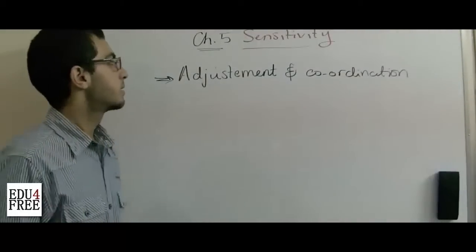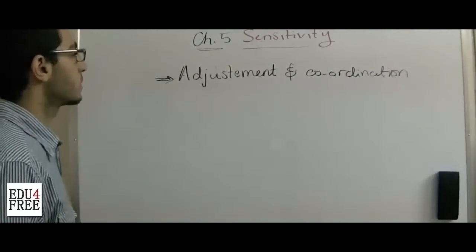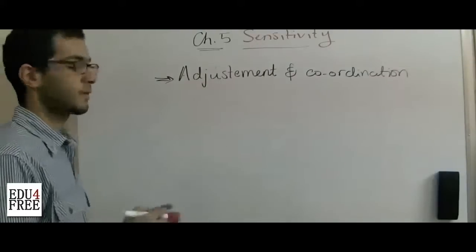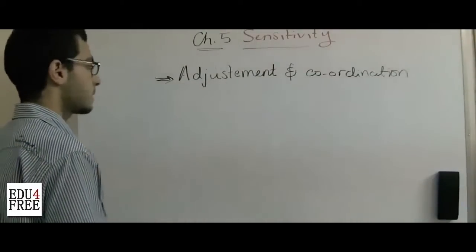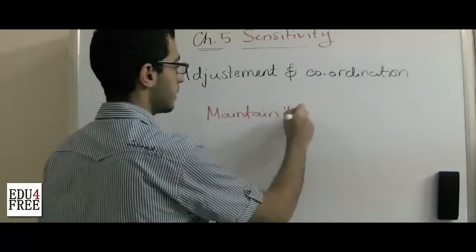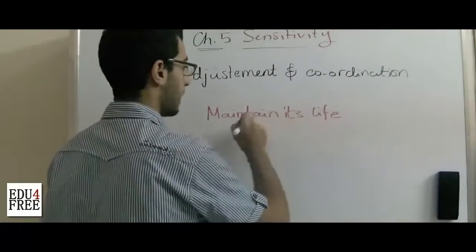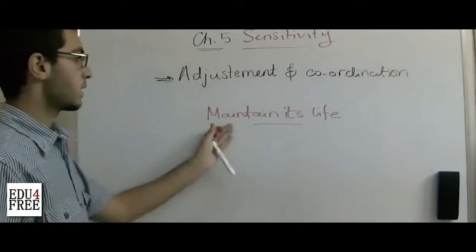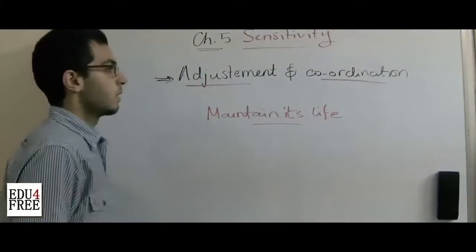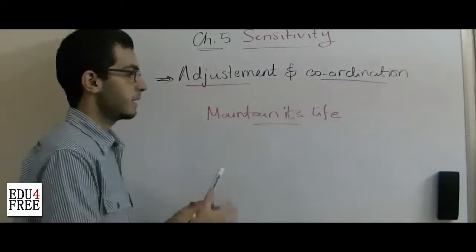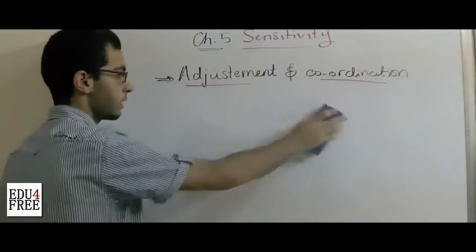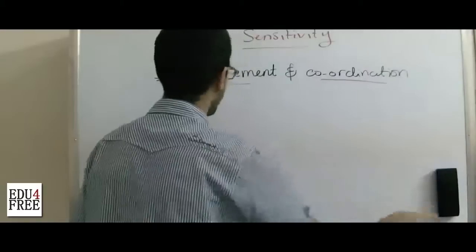Hello everybody and welcome back. Today we begin chapter 5 in biology which talks about sensitivity. So first, what is sensitivity? Sensitivity is a function in the living organism which helps it to maintain its life. Maintaining the life of the living organism depends on two processes: adjustment and coordination. Sensitivity is the ability of the living organism to sense the surrounding stimuli and react to them.